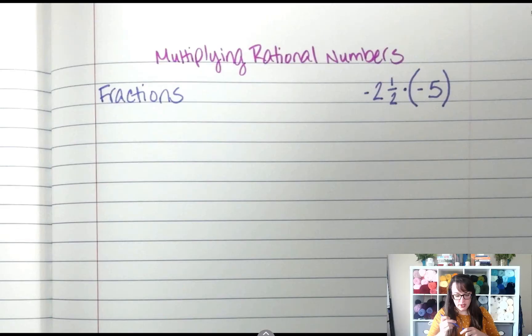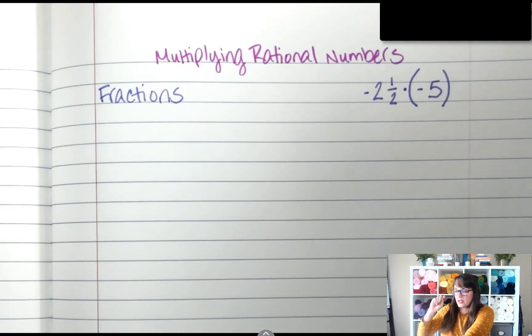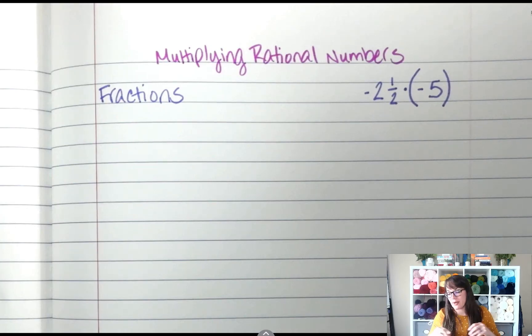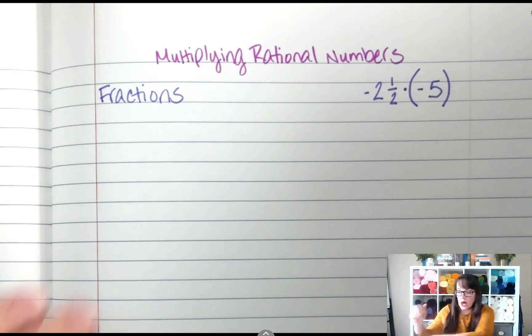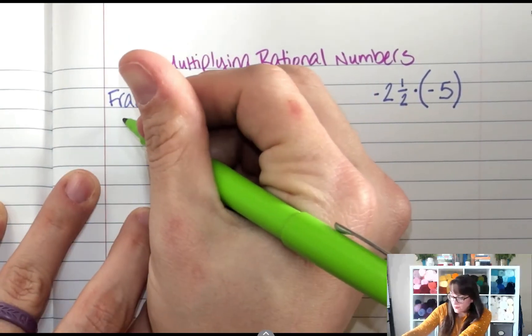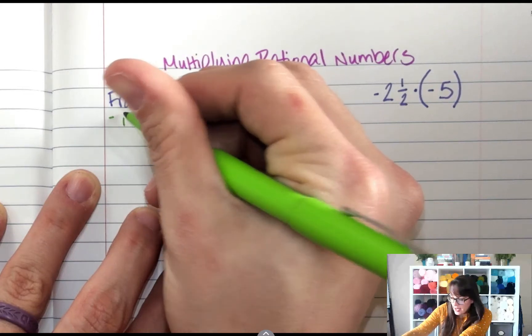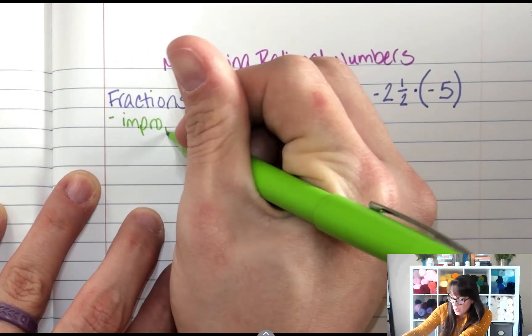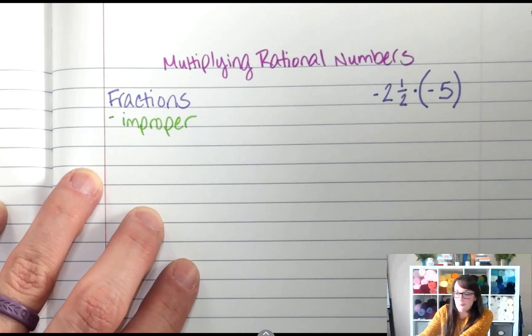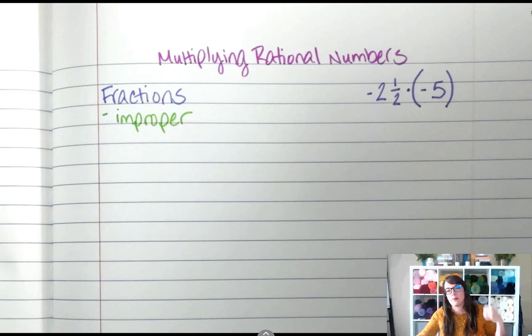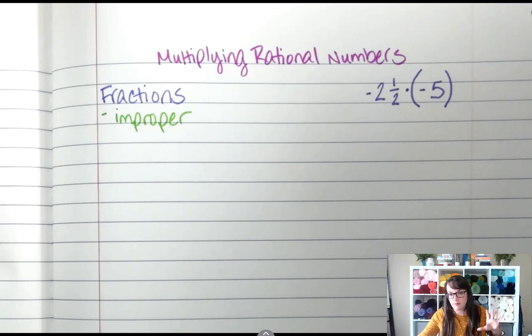So the first thing we do, when we multiply fractions, it never fails. Every year somebody wants to find a shortcut and they want to multiply the whole number first and then the fraction and something weird. No, don't do it. It doesn't work. The first thing we need to do is make sure that all fractions are improper. So we're going to make all fractions improper. And what that means is we don't have a mixed number anymore. We're going to have just a top-bottom fraction.